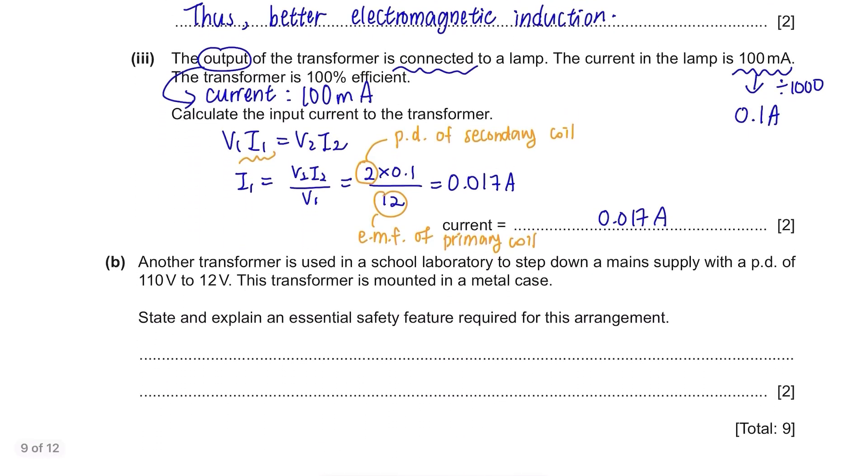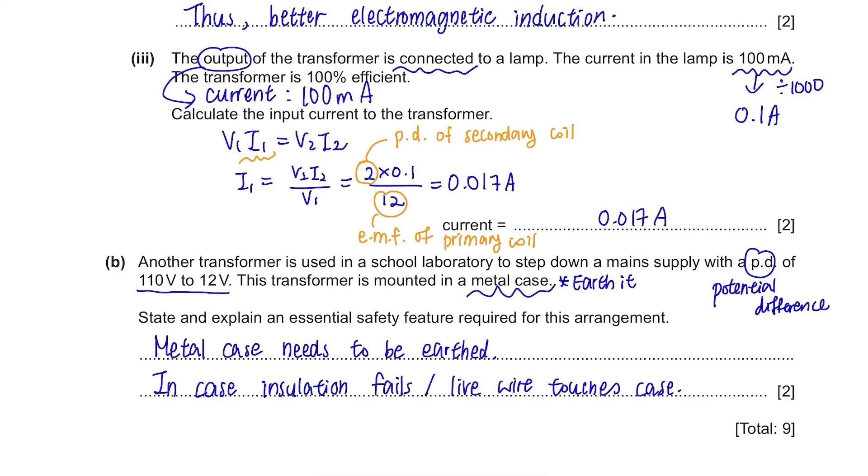Part D. Another transformer is used in a school laboratory to step down a main supply with a PD of 110V to 12V. PD stands for potential difference. This transformer is mounted in a metal case. State and explain an essential safety feature required for this arrangement. It's a metal case which can conduct electricity so we need to earth it, meaning to provide an alternate path for the electricity to flow to the ground or earth in case there is a fault current. The answer is the metal case needs to be earthed in case the insulation of the wire fails or the live wire touches the case.